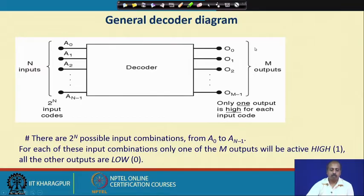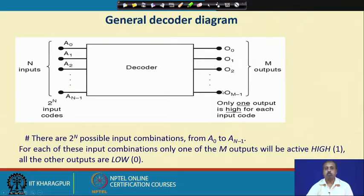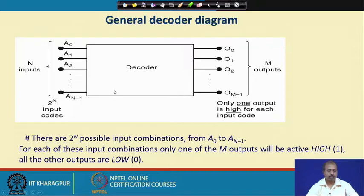In general form, a decoder has inputs a0 to a(n-1) — n inputs — and m outputs O0 to O(m-1). There are 2^n possible input codes from a0 to a(n-1), and for each input combination only one of the m outputs will be active high, while all others are low. This is the basic decoder definition, and we represent it by a square block symbol.